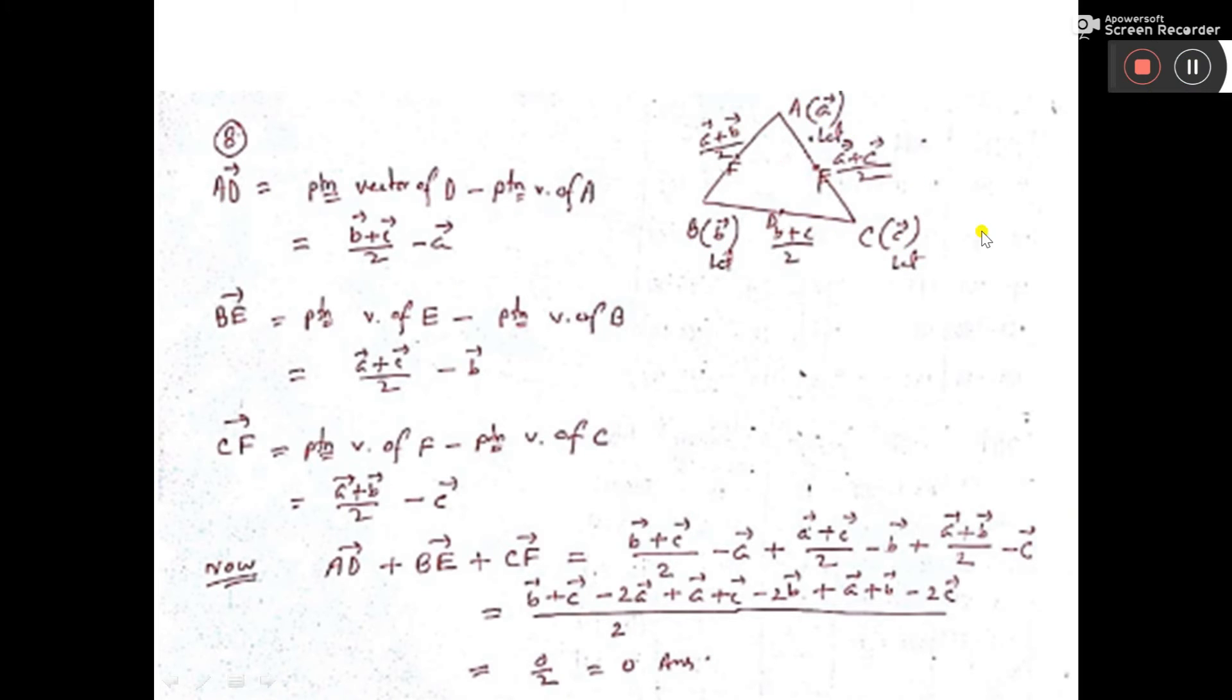Next, BE vector is the position vector of E minus the position vector of B. The position vector of E is (a + c)/2, so BE = (a + c)/2 - b.